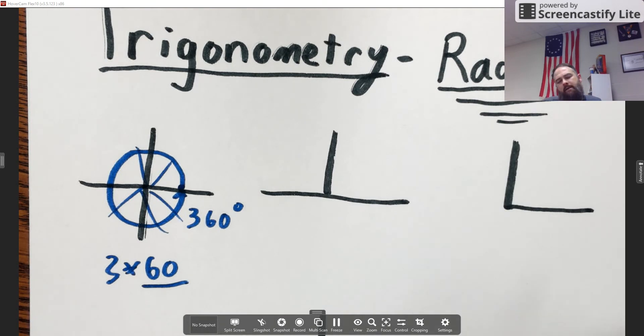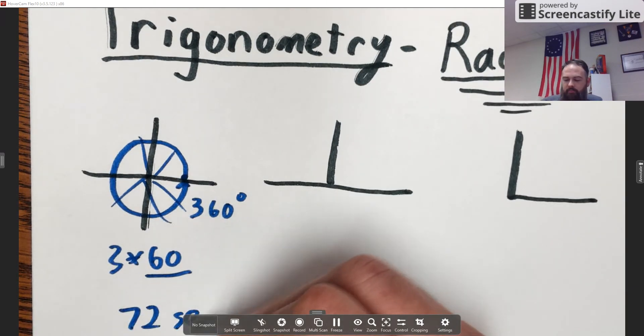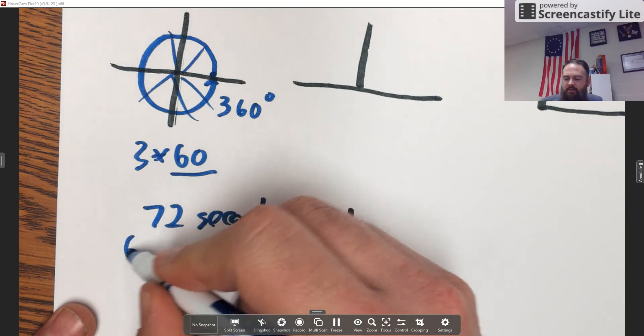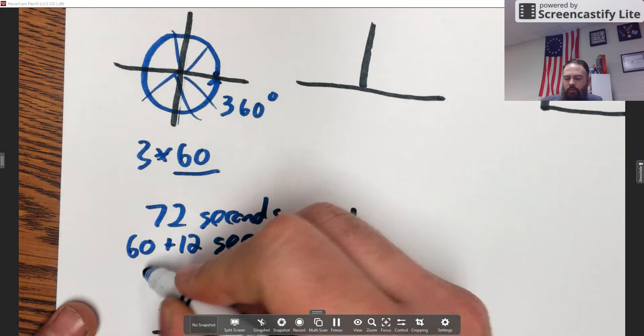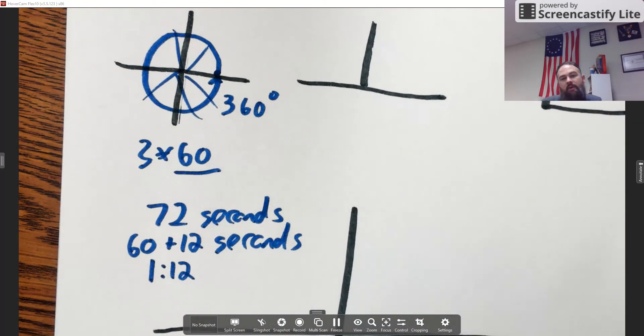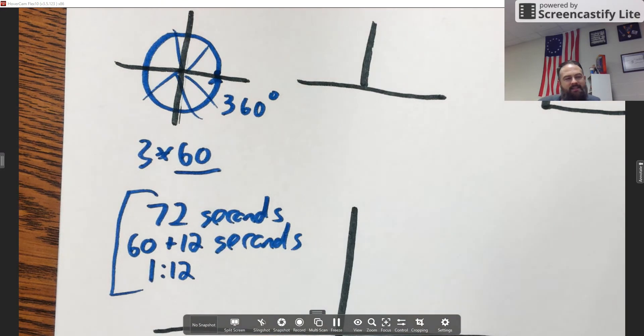Because of that, this 60 got incorporated into a lot of the maths that they developed over the years. We actually still do that with time. Think about it: 72 seconds could be rewritten as 60 plus 12 seconds, which we also write as one minute and 12 seconds. We do the exact same thing with our hours and minutes. 72 minutes is one hour and 12 minutes, and this all is based on a base 60 number system.